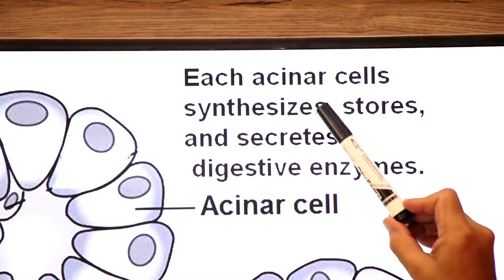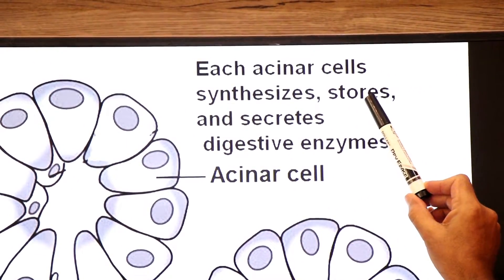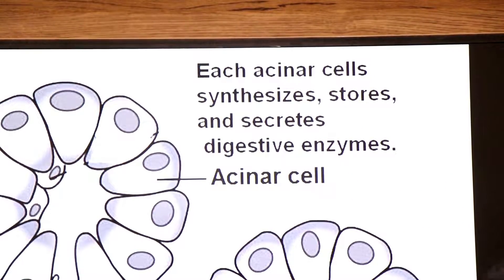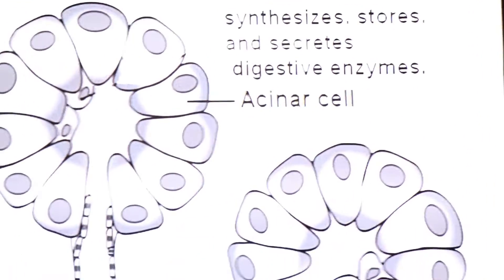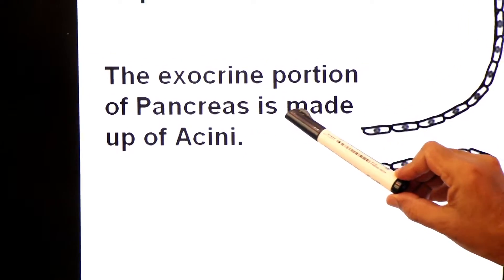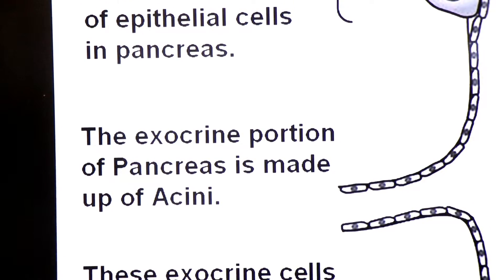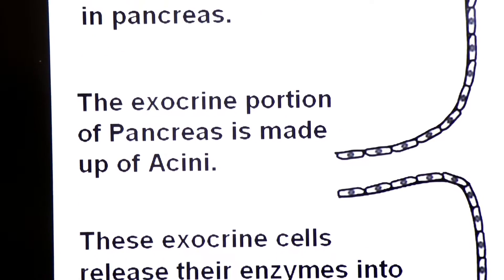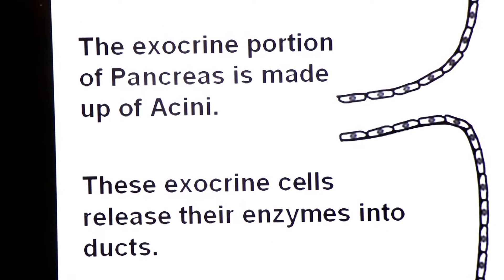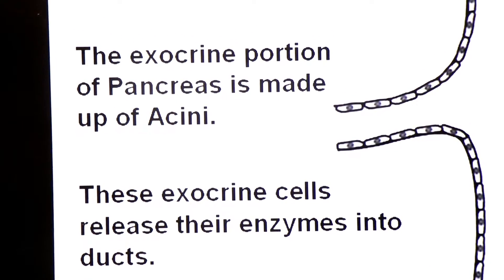Each acinar cell — enzymes ko synthesize bhi karta hai, store bhi karta hai, secret bhi karta hai. Kaahan pe secret karta hai? Ducts mein. The exocrine portion of the pancreas is made up of acinar cells, and these exocrine cells release their enzymes into ducts.